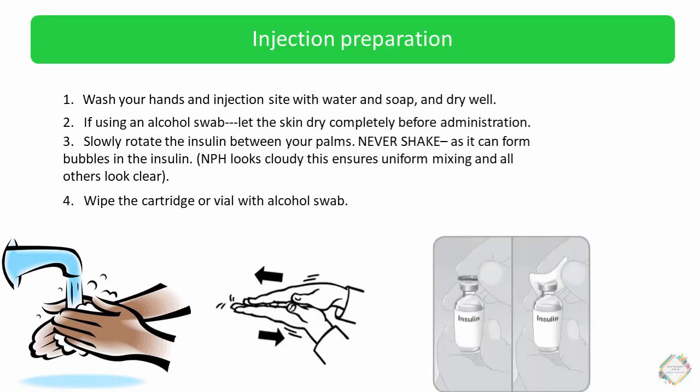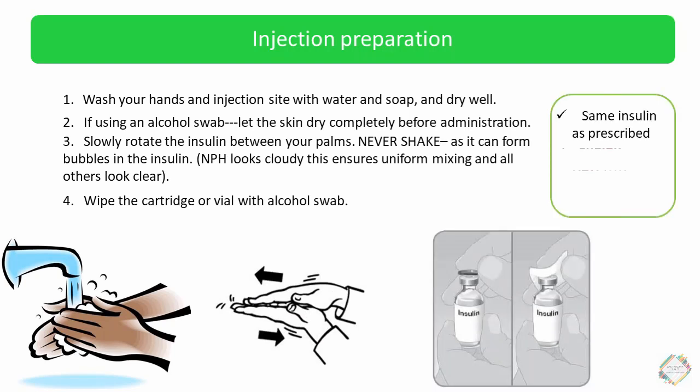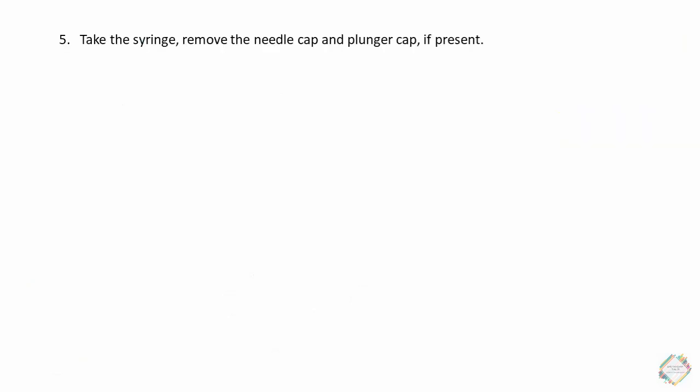The fourth step is to wipe the cartridge or vial with an alcohol swab. When taking the insulin, three things should be kept in mind: first, confirm it is the same insulin as prescribed by your doctor; second, check the expiry date to ensure it has not been crossed; and third, confirm it is free from any kind of clumps.